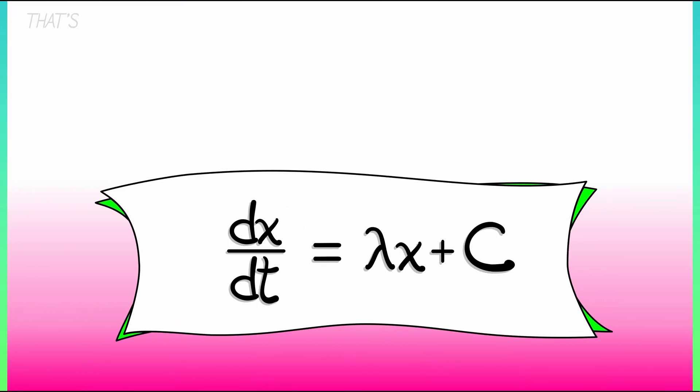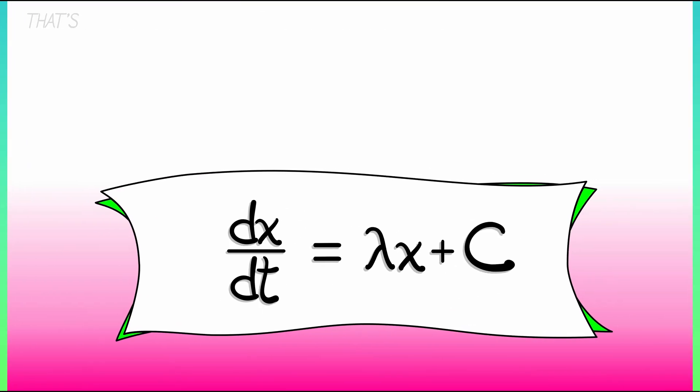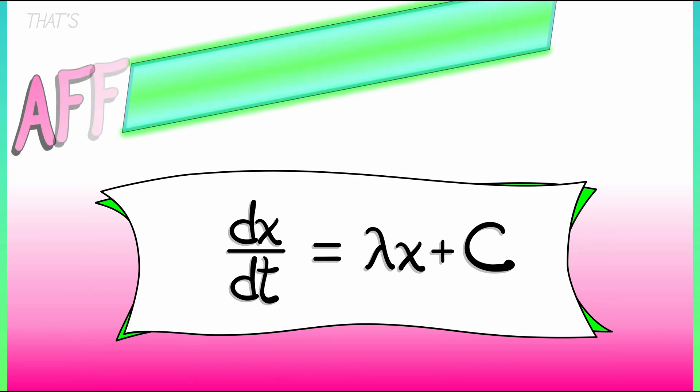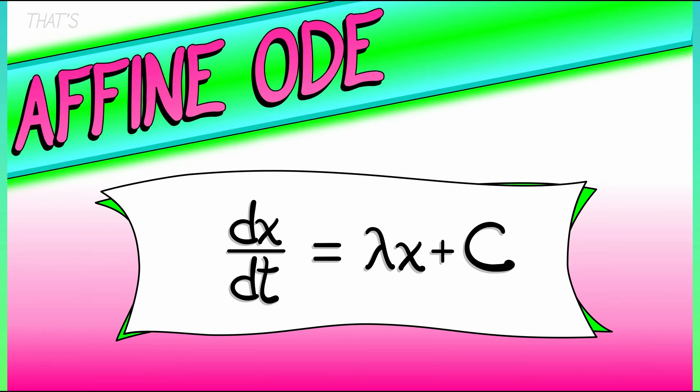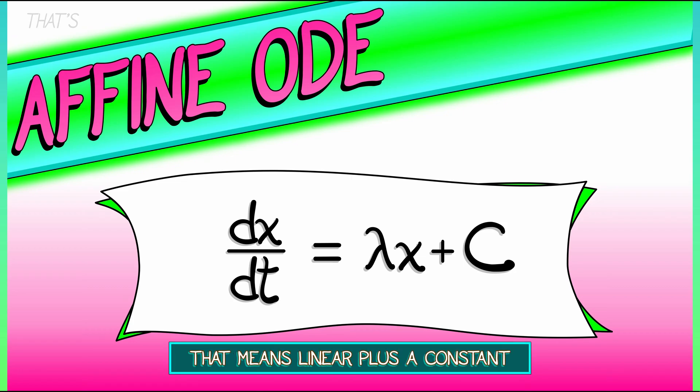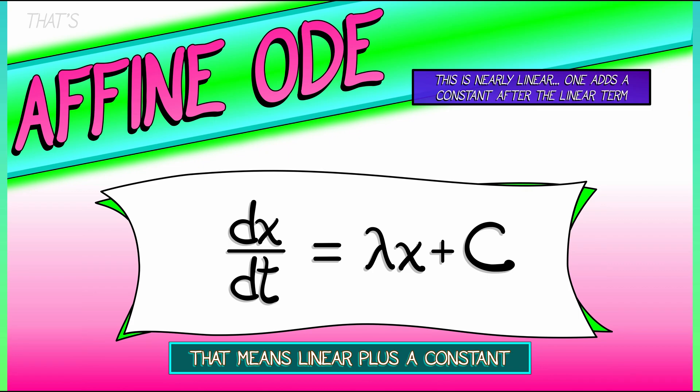These are equations of the form dx dt equals lambda x plus c, some constant. These are called affine ODEs. They are simply linear ODEs with a constant on the end. That's what an affine function is—linear plus a constant.